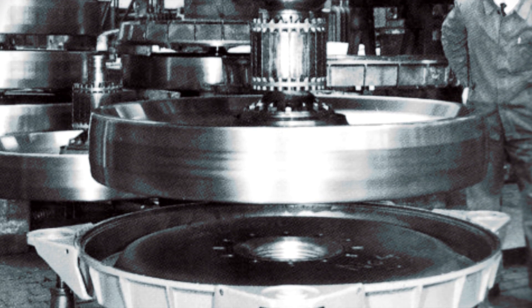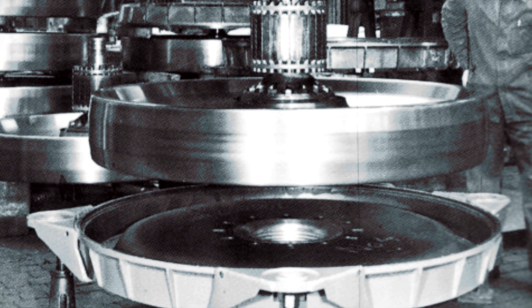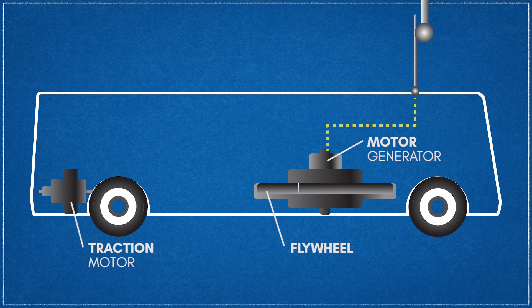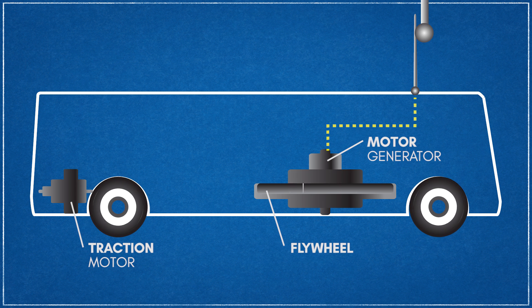Energy was transferred into the flywheel by an induction motor, which was powered by three booms mounted to the roof of the bus. The bus would contact overhead charging points along the route, such as at passenger stops, providing up to 500 volts for spinning up the flywheel.